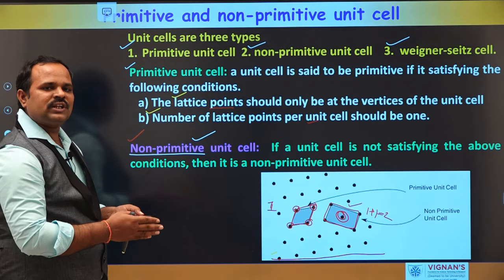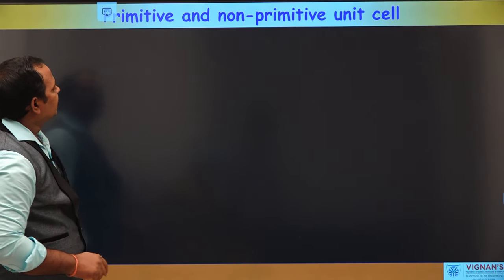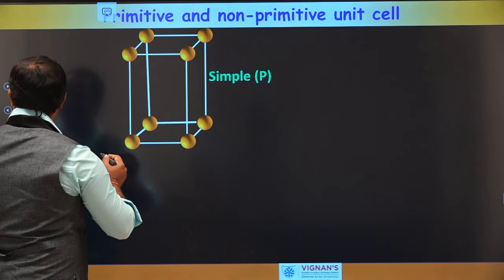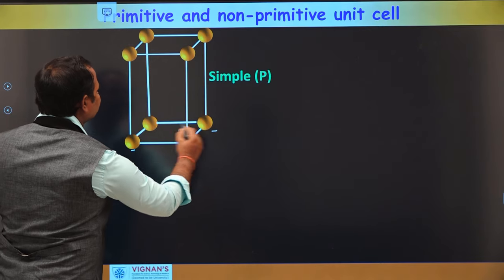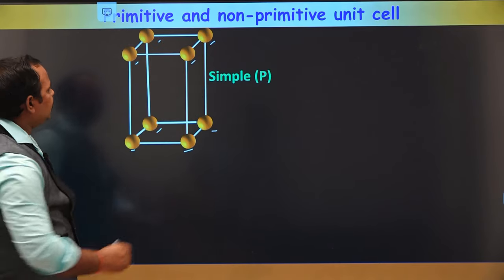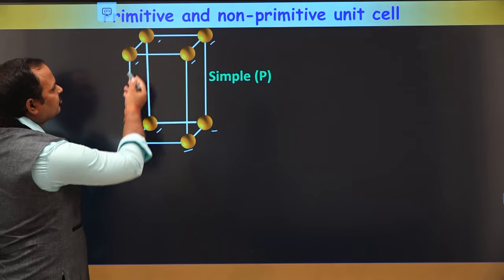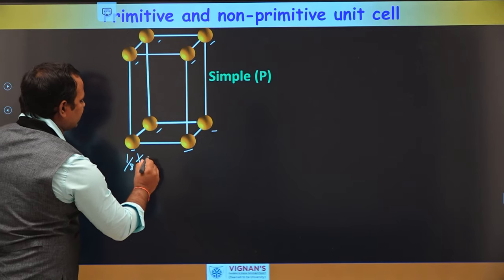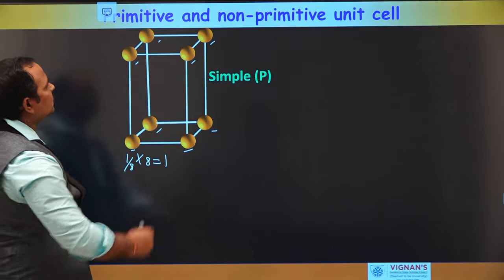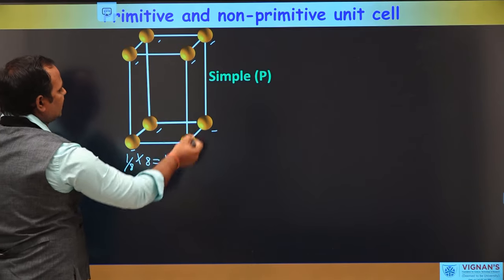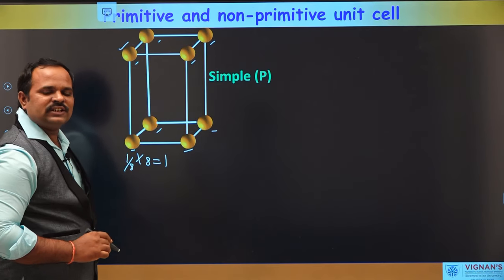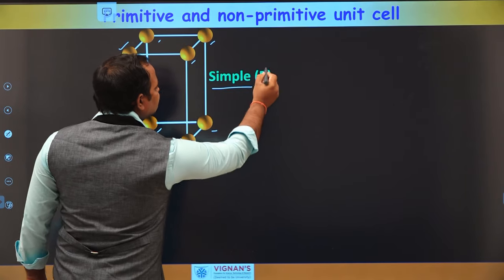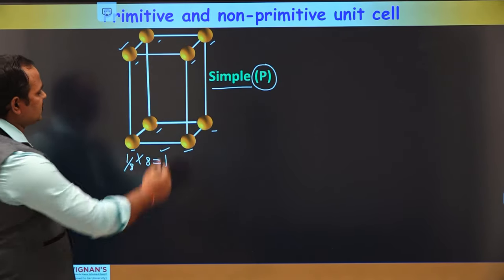Now let us see primitive and non-primitive unit cells in three dimensions. This is a simple or primitive unit cell. The atoms are lying only at the vertices of the unit cell — 8 atoms at 8 corners, each contributing 1/8, giving a total of 1 lattice point per unit cell. Both conditions are satisfied, so this is a primitive unit cell, represented with the letter P.